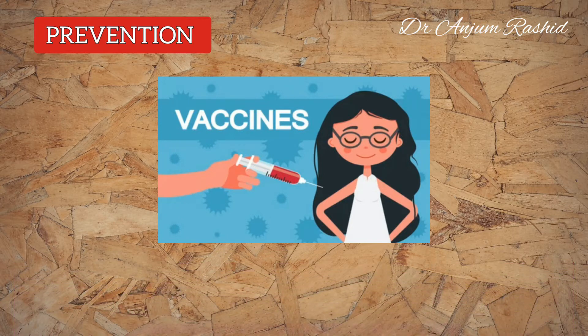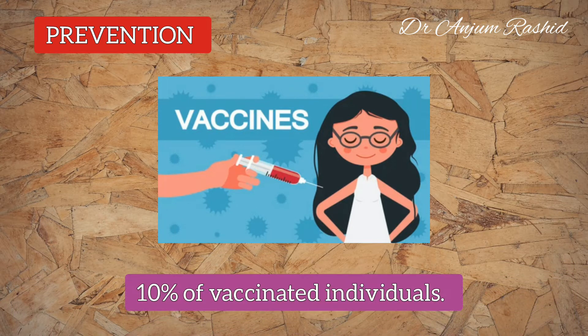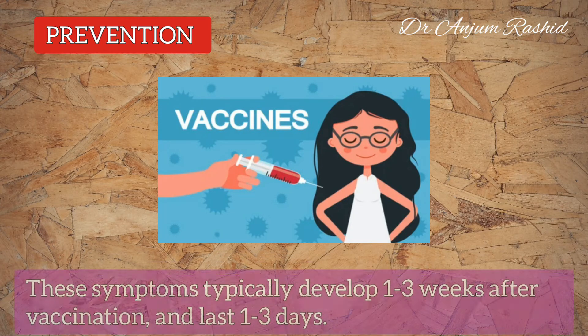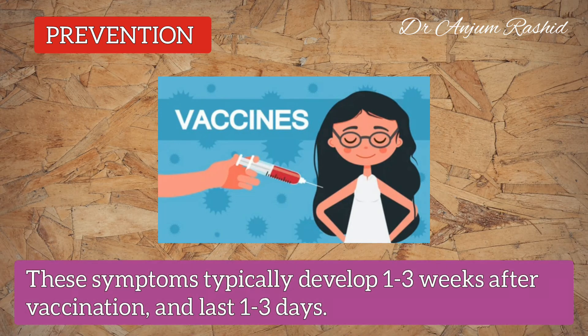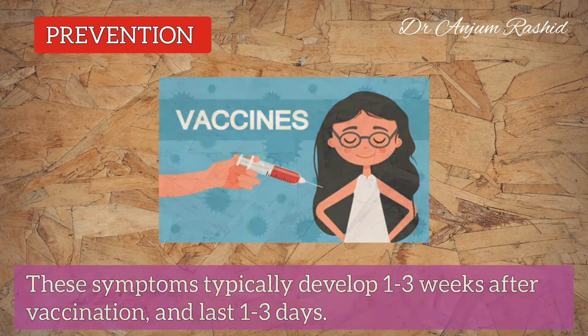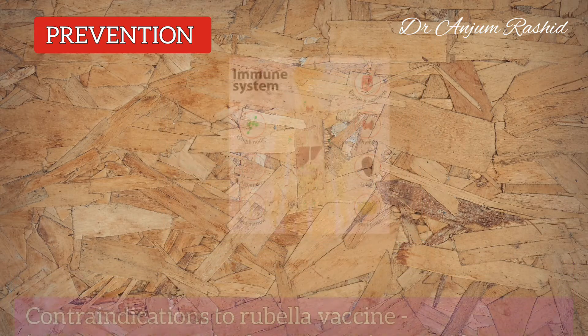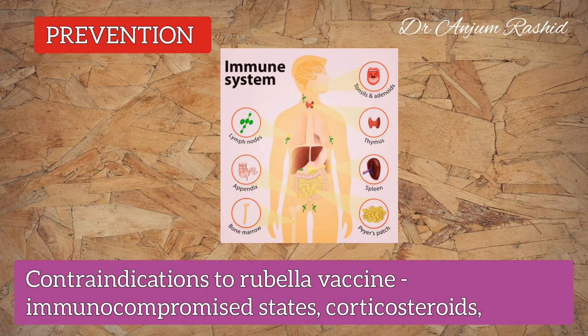Rubella vaccine is rarely associated with adverse effects; however, in post-pubertal females it causes arthralgia in 25 percent and acute arthritis-like symptoms in 10 percent of vaccinated individuals. These symptoms typically develop one to three weeks after vaccination and may last one to three days.